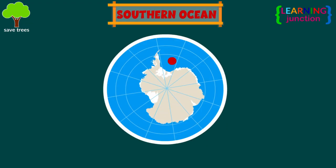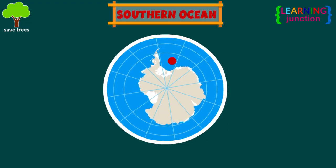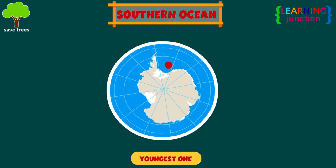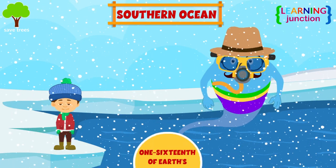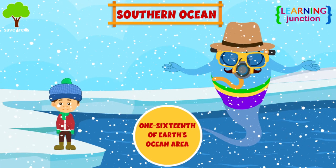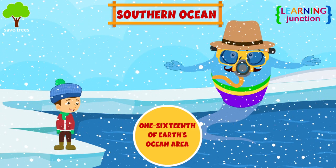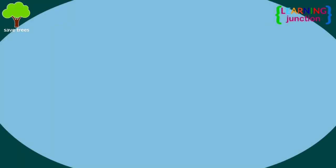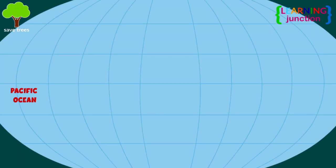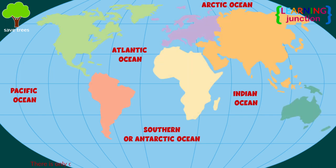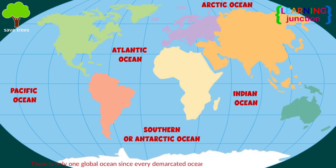The Southern or Antarctic Ocean is the youngest one and covers approximately 1/16th of earth's total ocean area. Together they all look like one ocean because they have no actual borders and water flows freely between all of them.